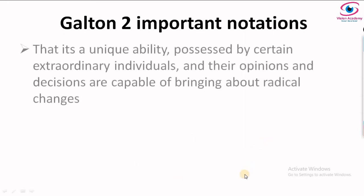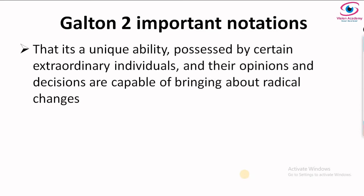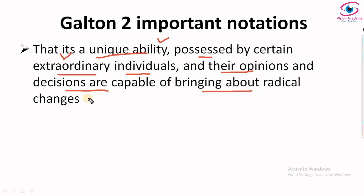Galton hypothesized two important notations for this trait theory. The first notation is that leadership is a unique ability possessed by certain extraordinary individuals, and their opinions and decisions are capable of bringing radical changes. Some people are extraordinary in the sense that their decisions and opinions are capable of bringing drastic, radical changes. This is the first notation of Galton.